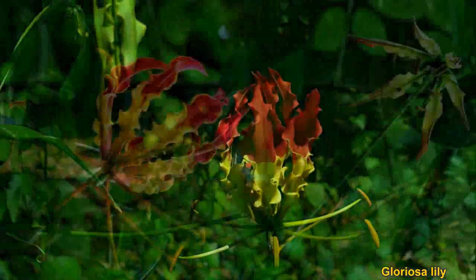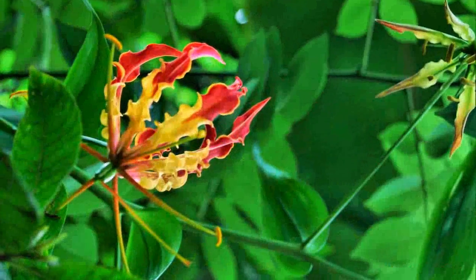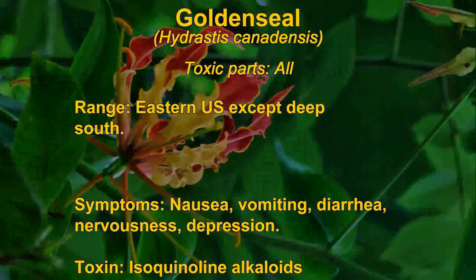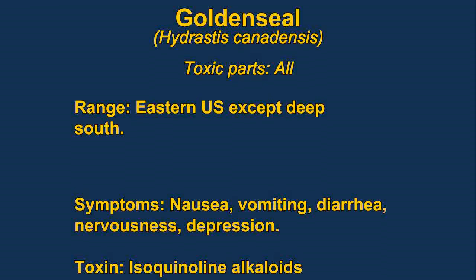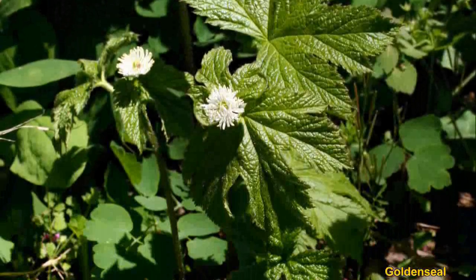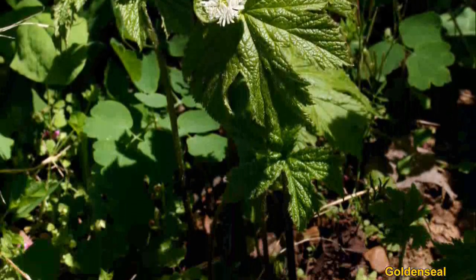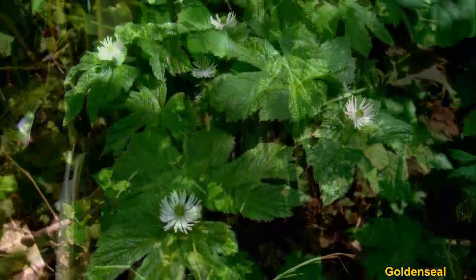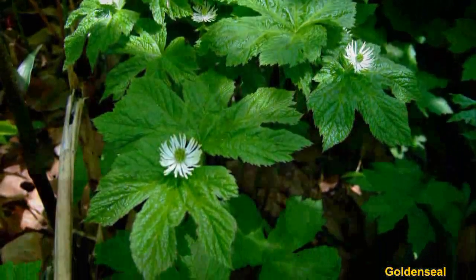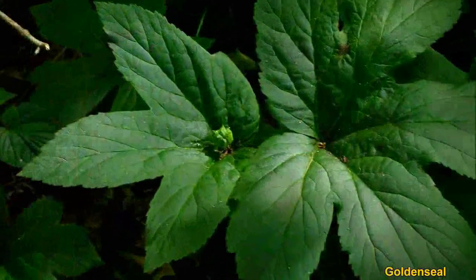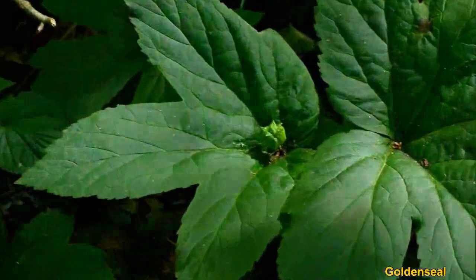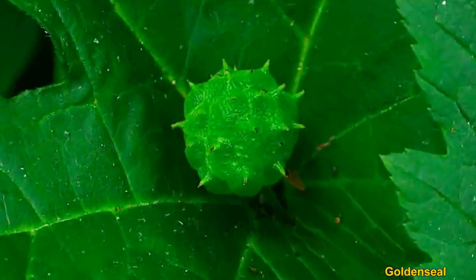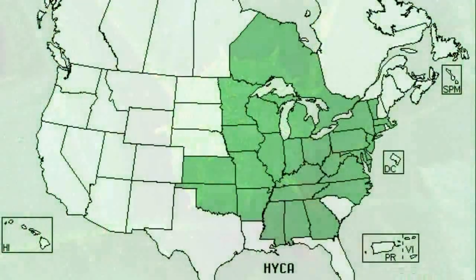Goldenseal is native to the eastern United States. It is normally found in the mountains, in forested areas or natural areas. All parts of the plant are toxic. Symptoms include nausea, vomiting, diarrhea, nervousness, and depression. The main toxin is an isoquinoline alkaloid.